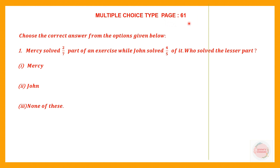This is found on page number 61 and the question is: choose the correct answer from the options given below. The first question is: Percy solved 2/7 part of an exercise while John solved 4/5 of it. Who solved the lesser part? Was it Mercy, or was it John, or was it none of these? We have been told how much Mercy has solved and how much John has solved, so we have to compare 2/7 and 4/5.